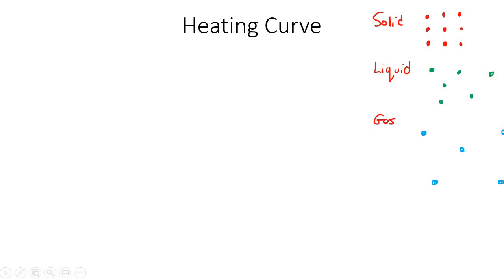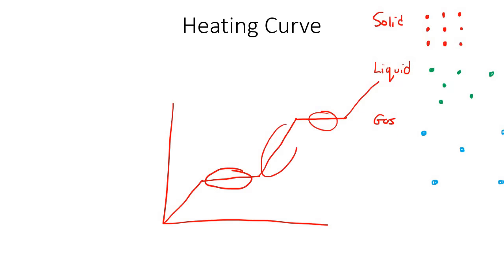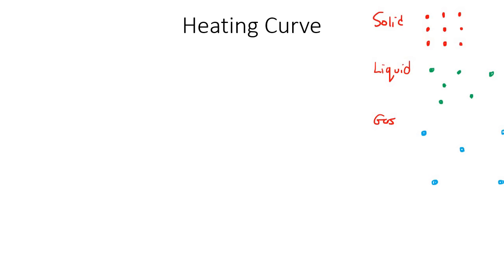In this lesson, we're going to be talking about a heating curve. Maybe you've seen it in class before — the curve that your teacher has possibly showed you that goes something like that. We're going to talk about all of the details, and we're also going to focus on why the graph remains horizontal in some parts whereas over here it increases.